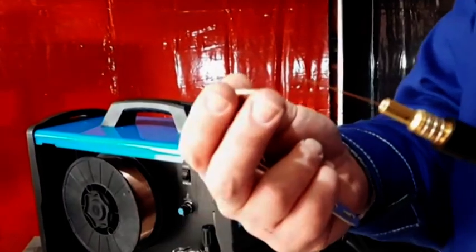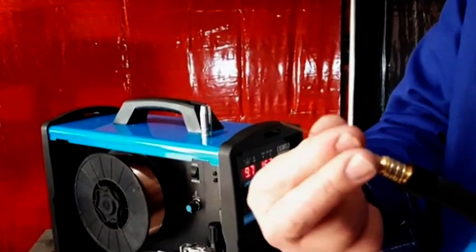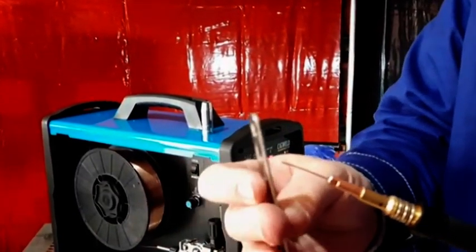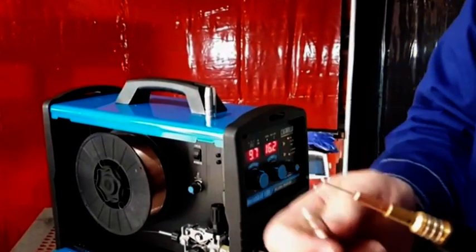Then we put the right size contact tip in, screw it back in clockwise. A little bit of tightness but again, never over-tighten things on these welding machines. Just enough to make it firm.